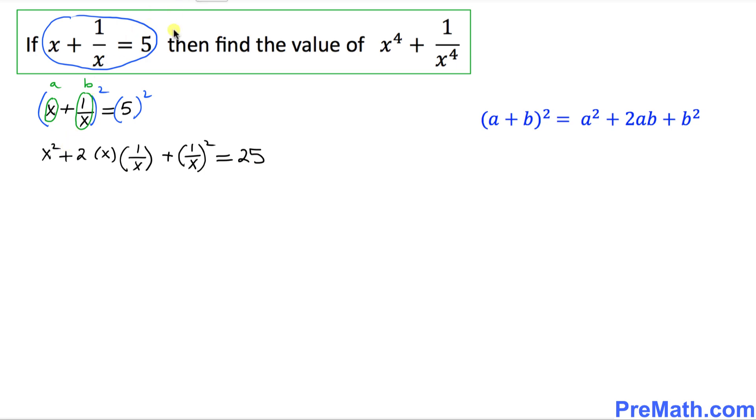Now simplify this one before we go any further. This x and x, they cancel out, so we simply end up with x squared plus 2 plus 1 over x squared equals 25.